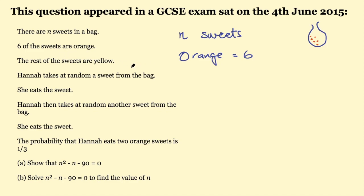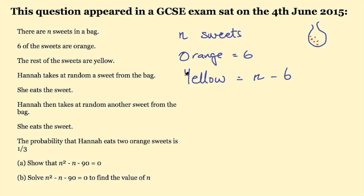Then it says the rest of the sweets are yellow. I need to think: how can I represent that? I'm not told how many yellow sweets there are. Well, I've written orange equals six, so I want to write yellow equals something. If the total number of sweets is n, then the number of yellow sweets must be n minus six.